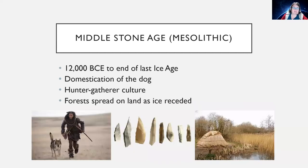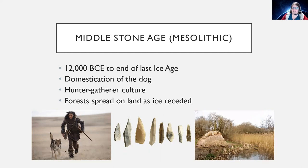The Middle Stone Age lasted from 12,000 BCE to the end of the last ice age. This is the period when Doggerland — now under the North Sea — would have been inhabited. It was a period of hunter-gatherers, with the dog being first domesticated and forests starting to spread as the ice sheets receded. Some ice sheets were actually about a kilometer thick, leaving huge gouges and rock deposits across the landscape.